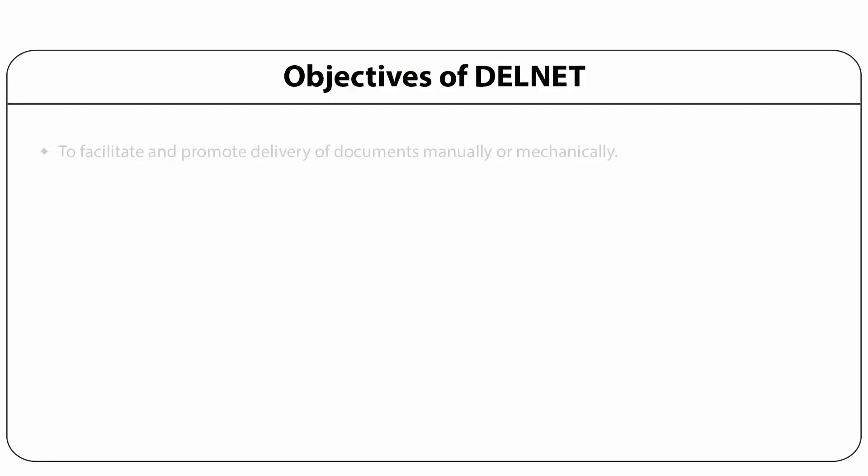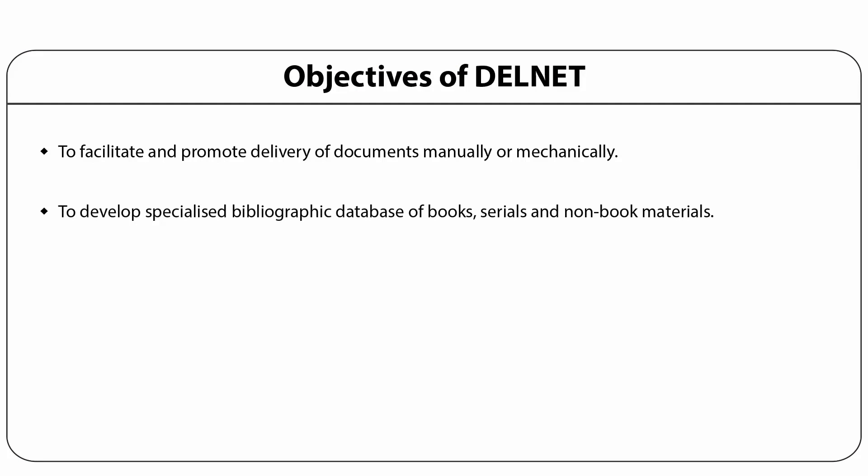DELNET coordinates efforts for suitable collection development and reduces unnecessary duplication wherever possible. It facilitates the establishment of referral and research centers, and maintains a central online union catalog of books, serials, and non-book materials of all participating libraries. DELNET also facilitates and promotes delivery of documents manually and mechanically, and develops specialized bibliographic databases of books, serials, and non-book materials.